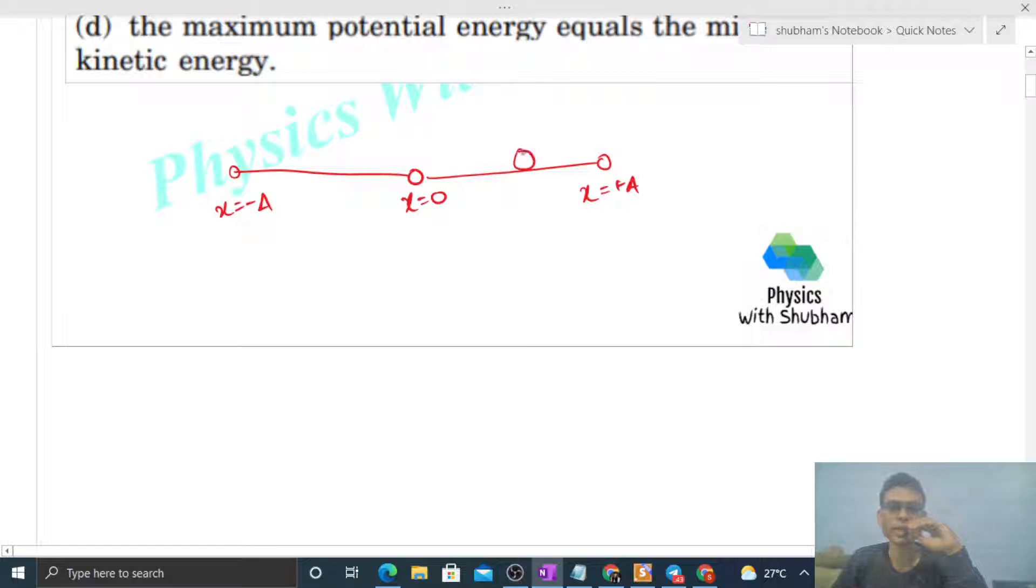So when the particle is at any general position x, the potential energy of the particle will be half of k into x square, and kinetic energy will be half of k A square minus x square.